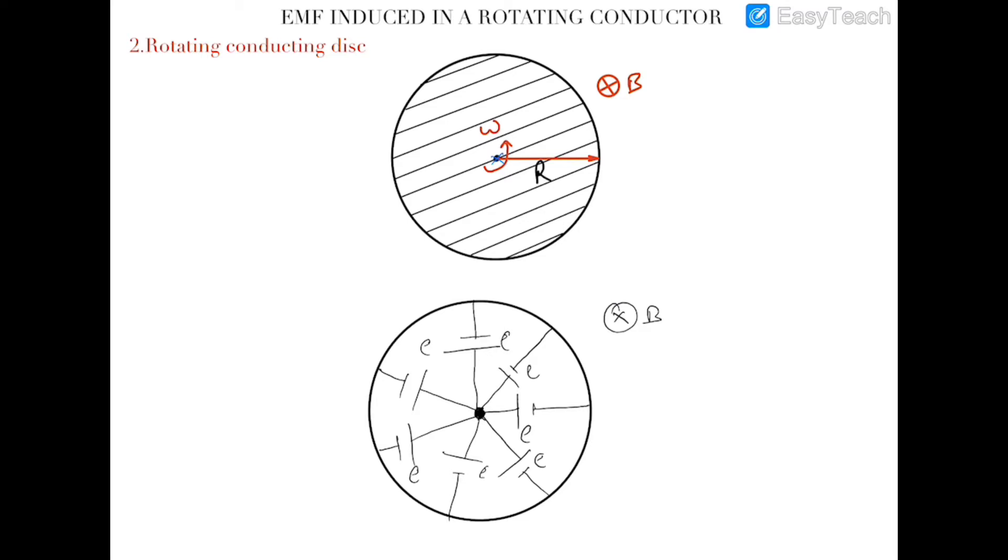Therefore we can assume that this disc is being formed by infinite number of rods which are very closely attached to each other, and if all these rods are rotating about one of their end...